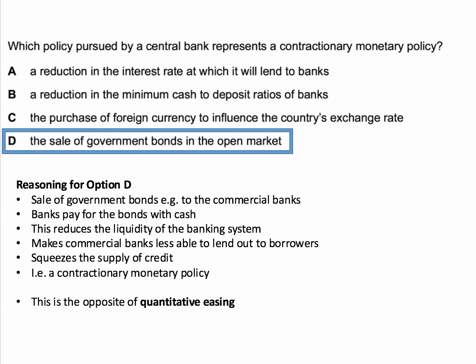Cash drains away because the banks are paying with cash for long-term bonds. This makes commercial banks less able to lend out to business and household customers, squeezing the supply of credit — which counts as a contractionary monetary policy. This is essentially the opposite of quantitative easing.